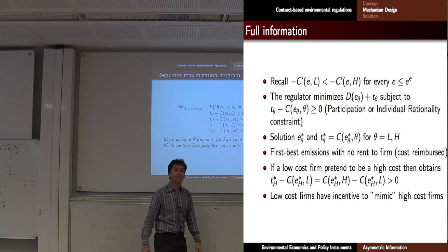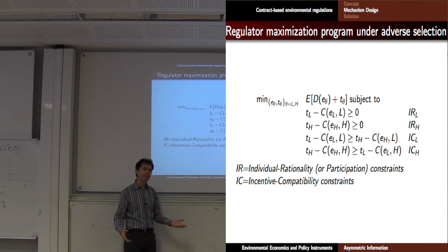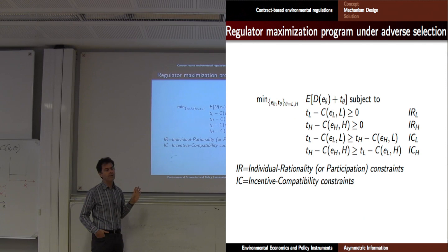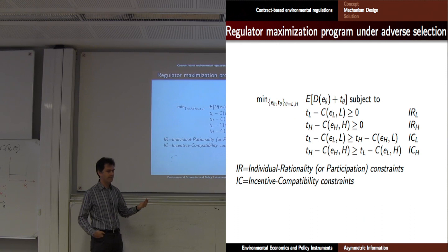How to deal with asymmetric information? You have some constraints. The constraint is that the firm participates and you induce truthful revelation of type — of high-cost type. The objective of the regulator is to minimize damage plus transfer plus subsidies, because the regulator has to pay for the cost of abatement through the subsidy.